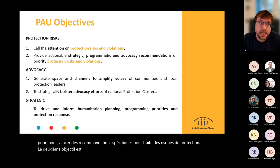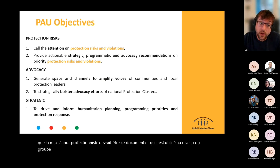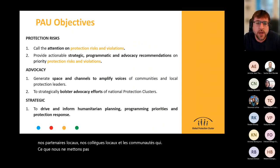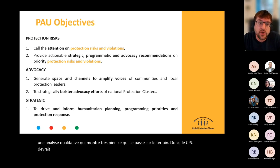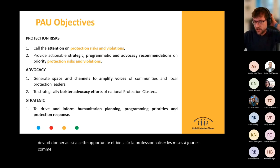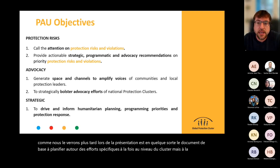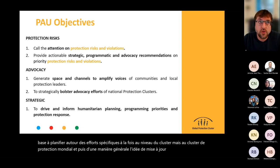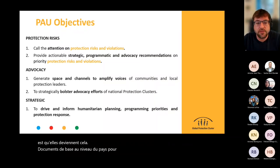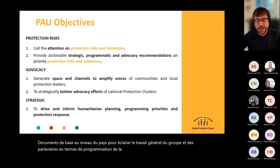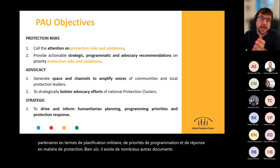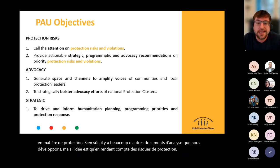The second goal relates broadly to advocacy — the idea is that the protection analysis update should be the document used at cluster level to showcase the voices of local partners, local colleagues, and communities, which we don't always represent well qualitatively. The PAU should give us this opportunity. The third objective is that the protection analysis updates become the core documents at country level to inform the general work of the cluster and partners in terms of humanitarian planning, programming priorities, and protection response — becoming the authoritative analysis document in the country.